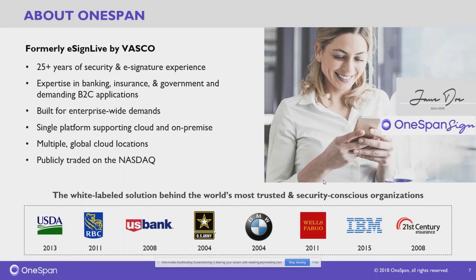OneSpan Sign is a single platform available in multiple deployment options, with data centers in Canada, the US, Australia, Britain, and Germany — available as public cloud, on-premise, or private cloud. The organization is traded on NASDAQ with close to $200 million in annual sales and has been profitable for the last 56 quarters.